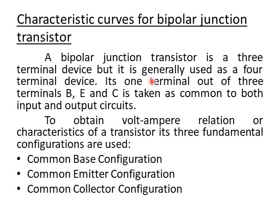The Bipolar Junction Transistor is a three-terminal device (तीन टर्मिनल युक्ति). The three terminals are: Emitter (उत्सर्जक), Base (आधार), and Collector (संग्राहक). But it is generally used as a four-terminal device. How? One terminal out of the three — B, E, and C — is taken as common (उभयनिष्ठ), so both input and output circuits share that terminal, making it a two-port network with one input port and one output port.